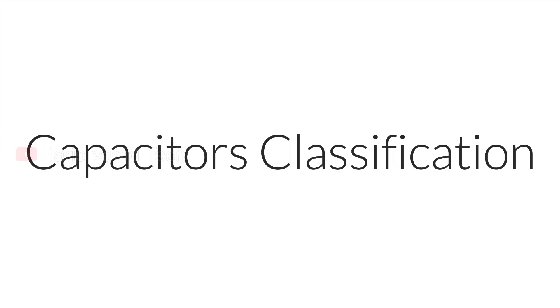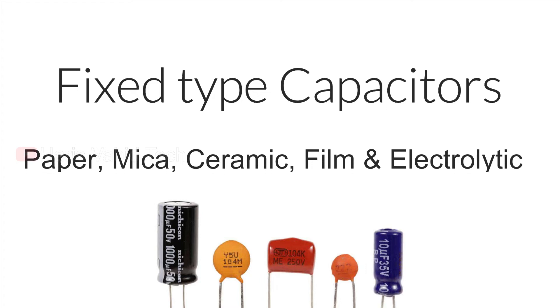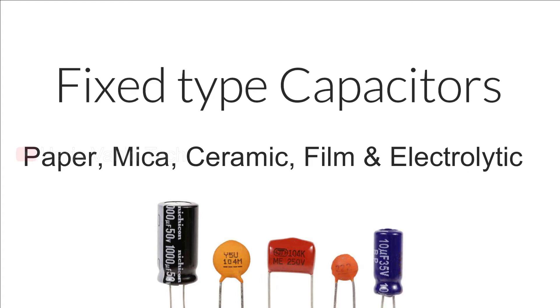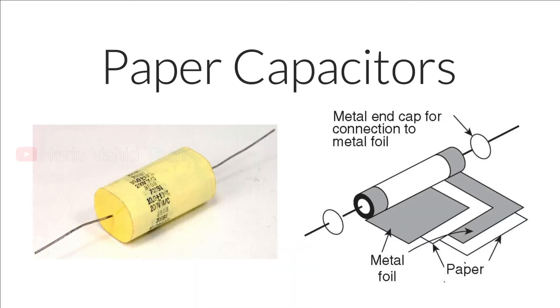Capacitors are also classified as fixed type and variable type. Fixed type capacitors are those whose capacitance value cannot be changed. There is also classification according to the dielectric material used to manufacture the capacitor — for example, paper, mica, ceramic, polyester, electrolytic, etc.